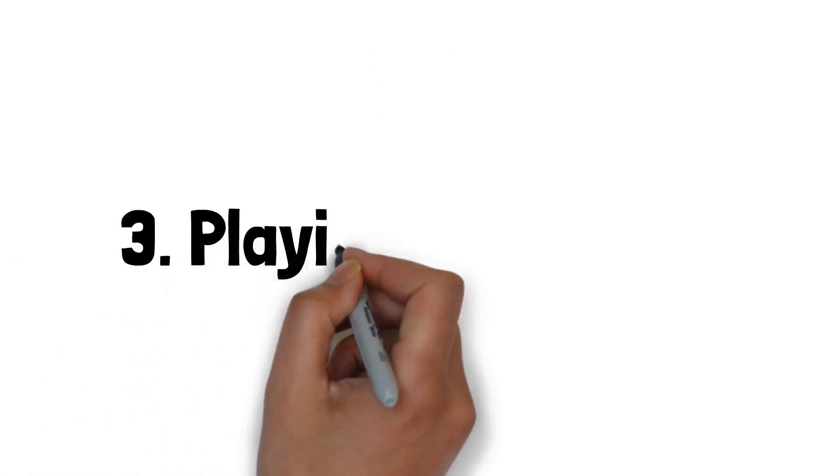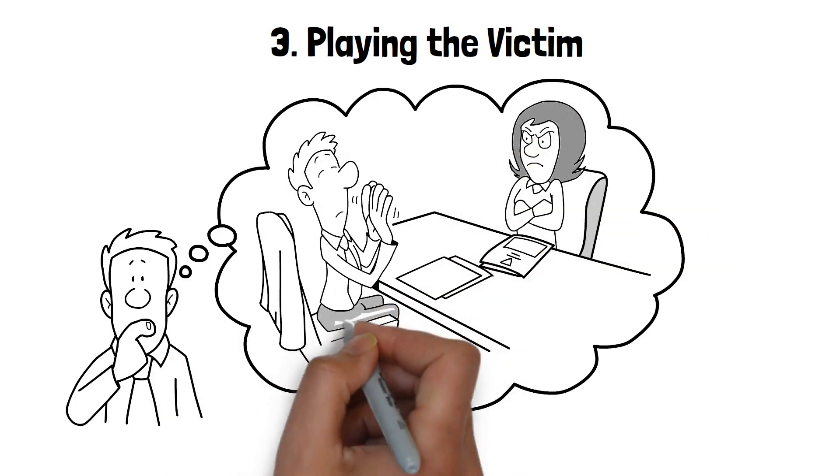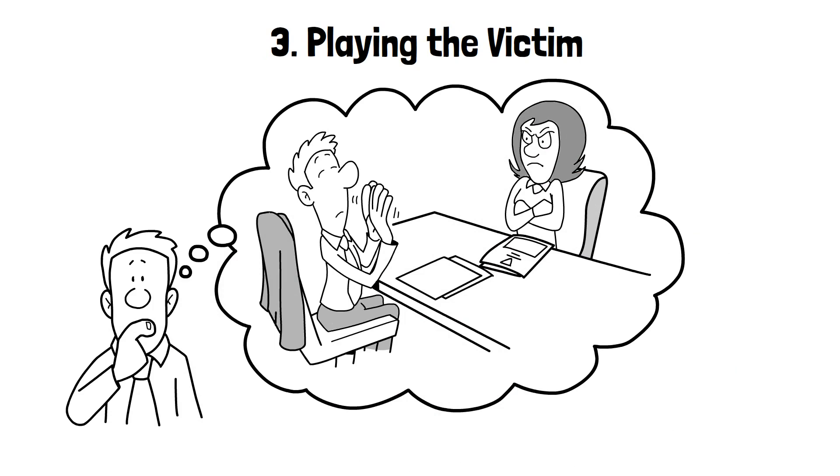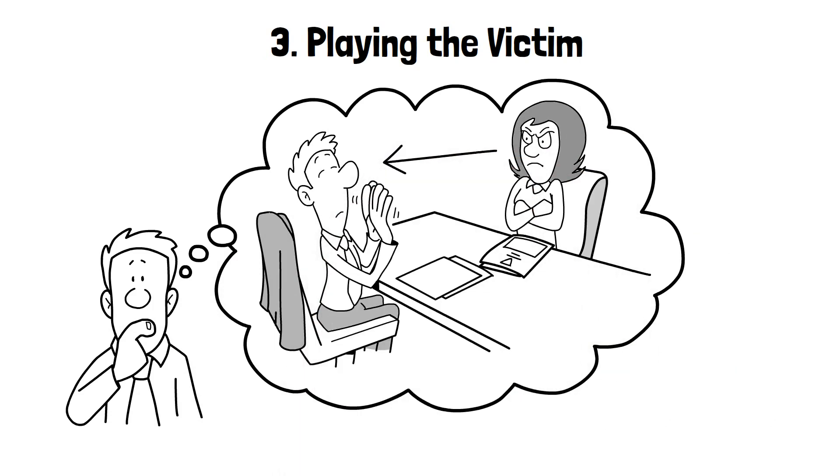3. Playing the victim. It's one of the oldest tricks in the book, but it's incredibly effective. They do something to hurt you, but somehow, by the end of the conversation, you're the one apologizing. How does that work? Don't blame yourself.